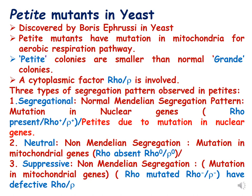To understand petite mutants in yeast, we need to remember the cytoplasmic factor rho, which is involved in making the colonies normal. If rho is absent, the colonies will be smaller. This rho factor is present in the cytoplasm and is formed by mitochondrial genes. If it is absent, there is a problem in the respiratory pathway.